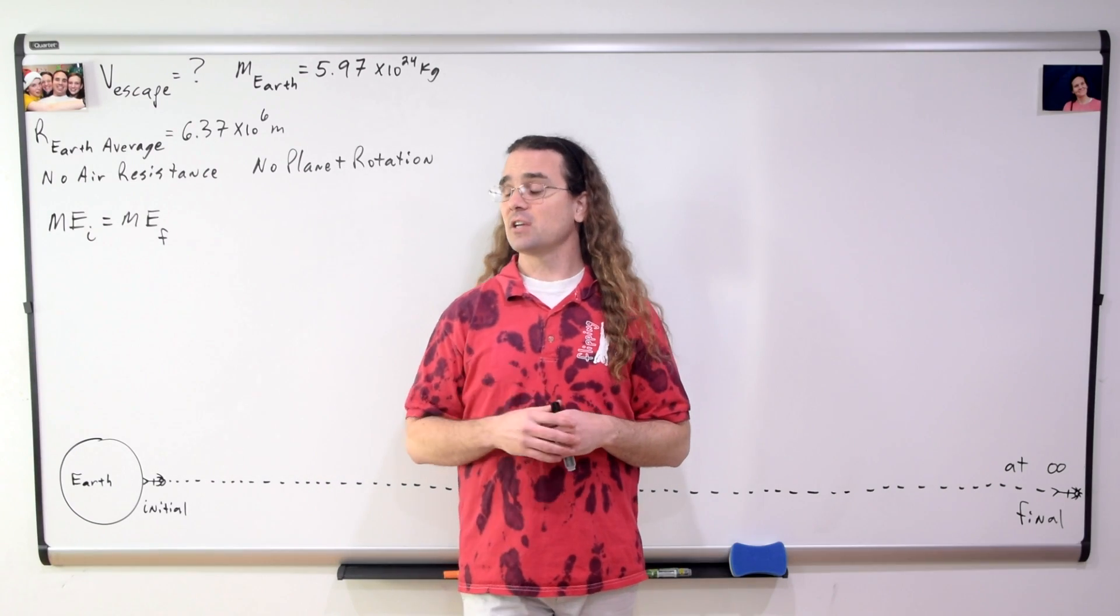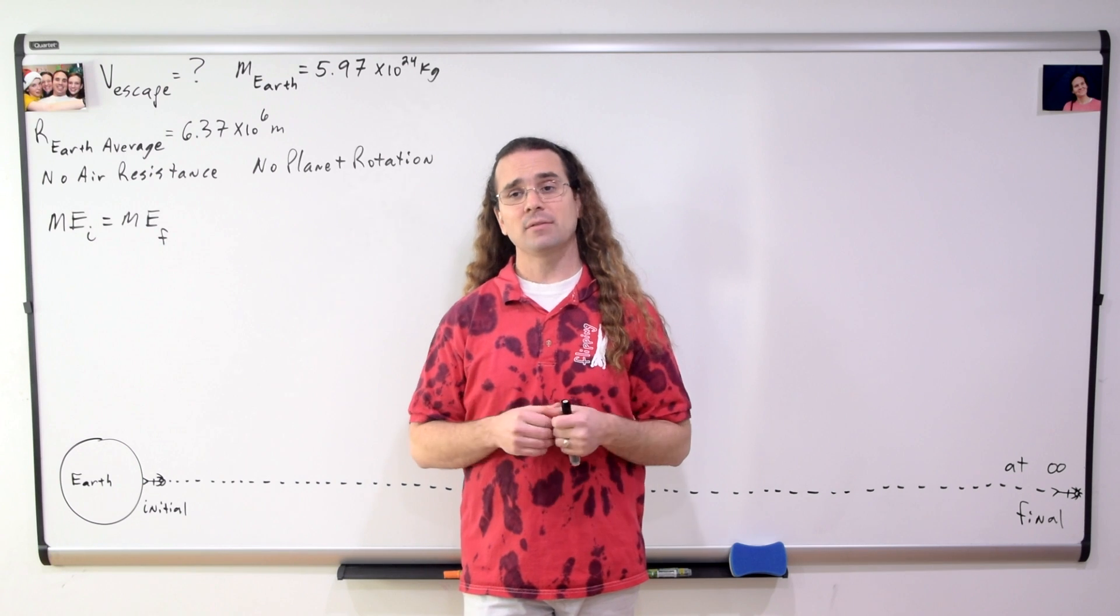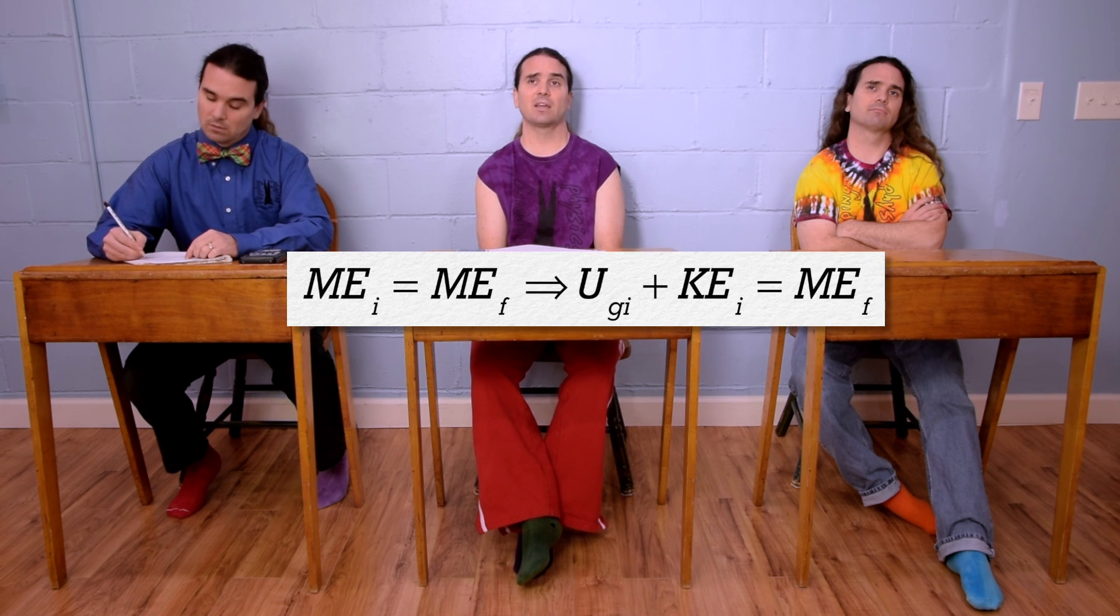Bobby, what sorts of energy does Bo start and end with? Mr. P, initially, there is negative gravitational potential energy since universal gravitational potential energy is always negative. And Bo has an initial velocity, so he has an initial kinetic energy.